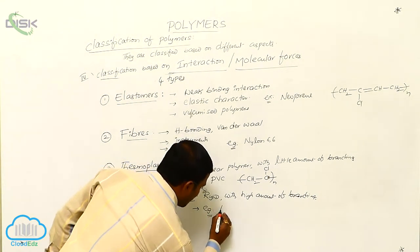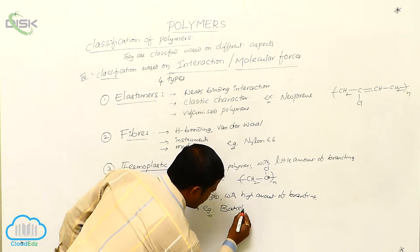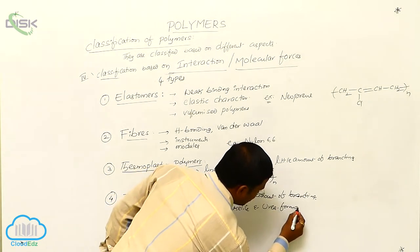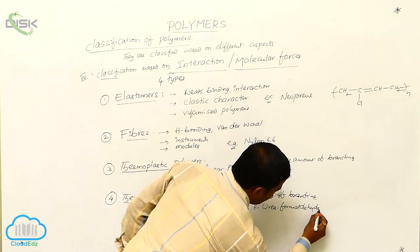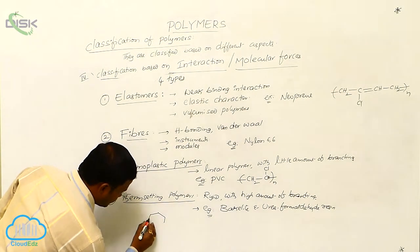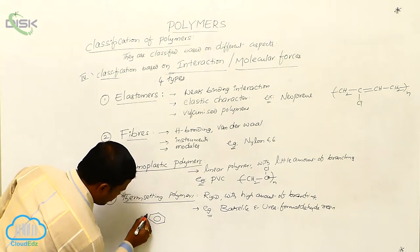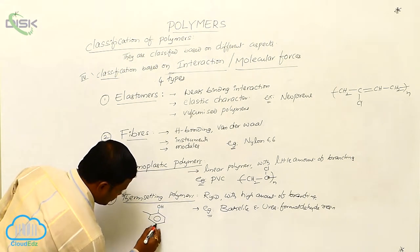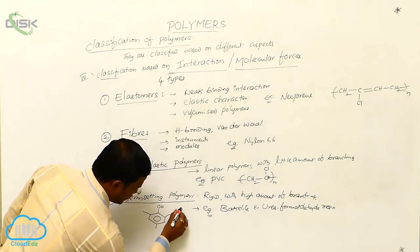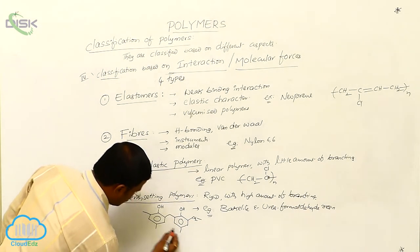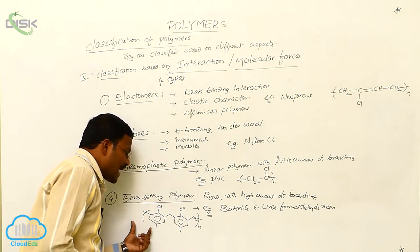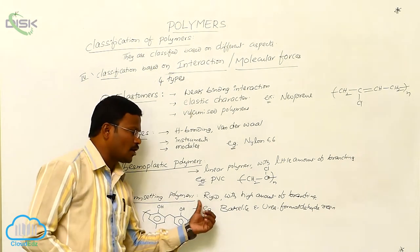Examples of thermosetting polymers are bakelite and urea formaldehyde resin. The structure of bakelite contains OH, OH, CH₂ groups. This is the structure of bakelite, which stands as an example for thermosetting polymers. They are not reused.